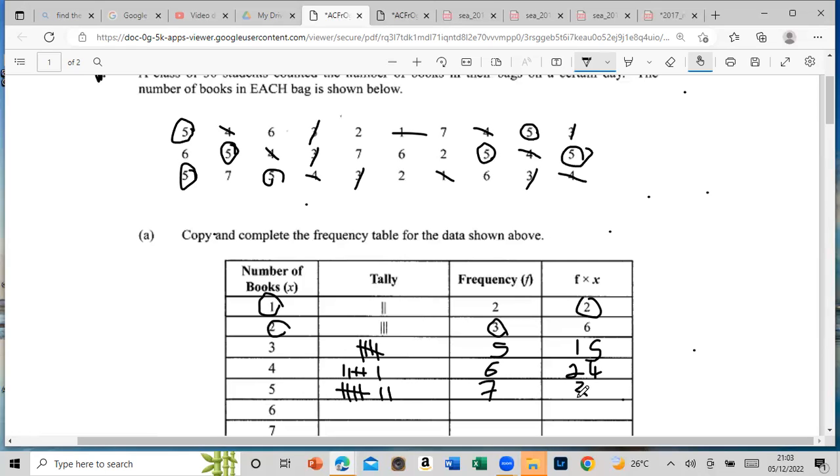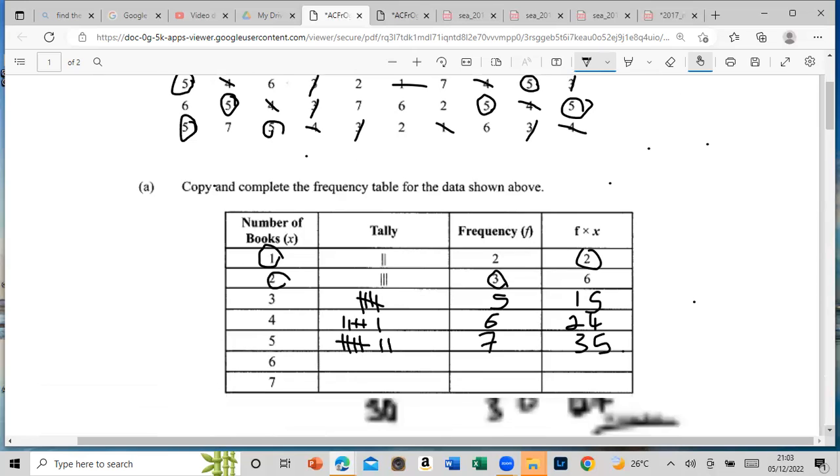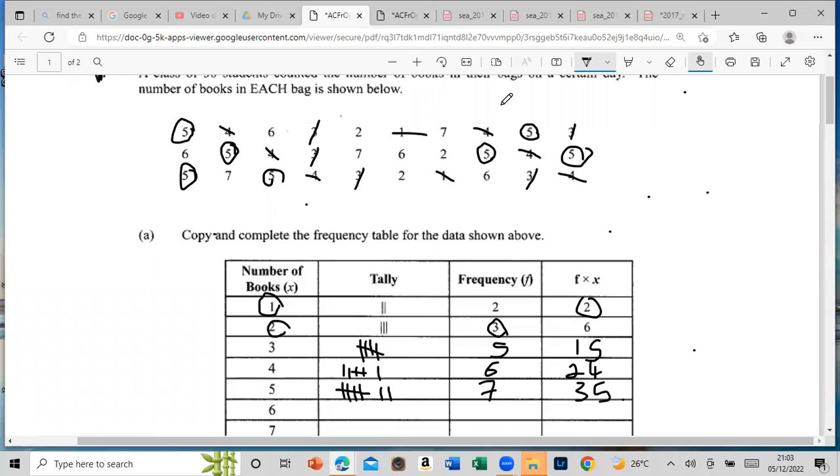Let's proceed, move to the six now. We have one, two, three, and four sixes. So we have four sixes. Multiply the frequency times this, so four times six is twenty-four. We're going on nicely.